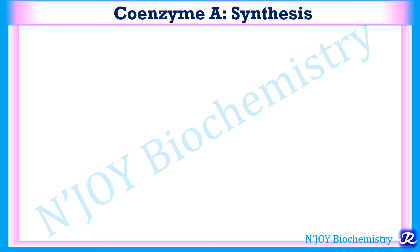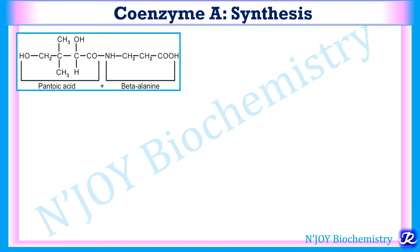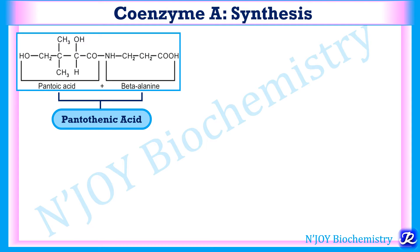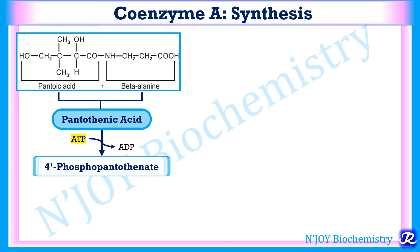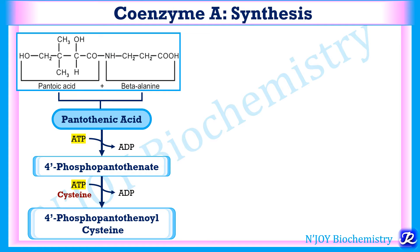Now let us see how coenzyme A is synthesized from pantothenic acid. Pantothenic acid is derived from pantoic acid and beta-alanine — that is the first step. With the help of ATP, there is formation of 4'-phosphopantothenate, catalyzed by the enzyme pantothenate kinase. In the next reaction, ATP and cysteine are both required, and from 4'-phosphopantothenate there is formation of 4'-phosphopantothenoyl cysteine. So this second reaction also requires ATP.